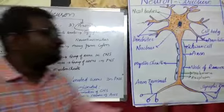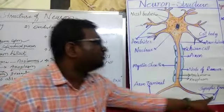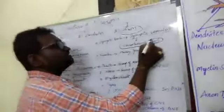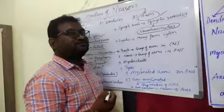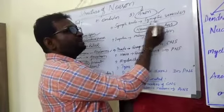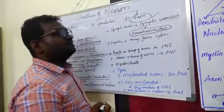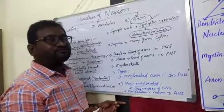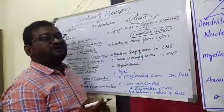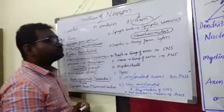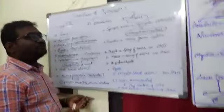These synaptic knobs have synaptic vesicles. These synaptic vesicles contain a chemical substance that is called as neurotransmitters. These neurotransmitters are helpful for the transportation of nerve impulses from one neuron to another neuron.